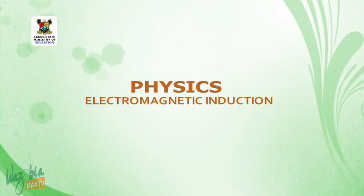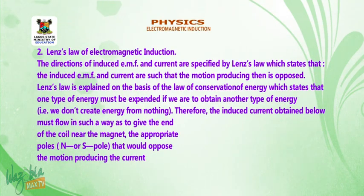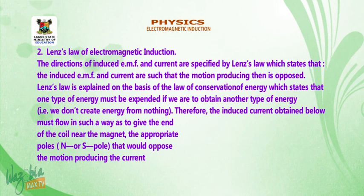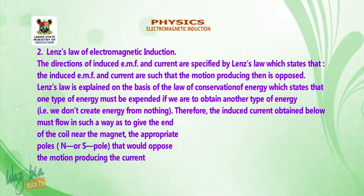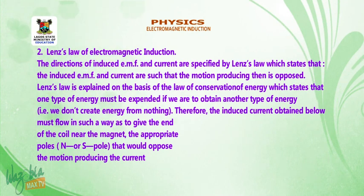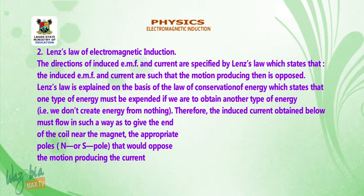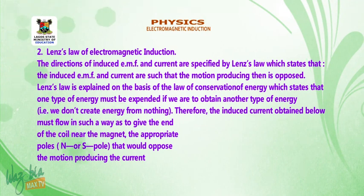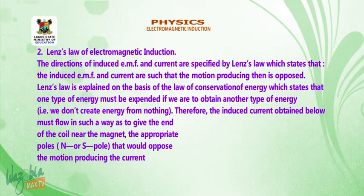We are on the law of electromagnetic induction. Lenz's law is explained on the basis of the law of conservation of energy, which states that one type of energy must be expended if we are to obtain another type of energy — that is, we don't create energy from nothing. Therefore, the induced current must flow in such a way as to give the end of the coil near the magnet the appropriate pole, north or south, that will oppose the motion producing it. The direction of the current is opposing the motion causing it.